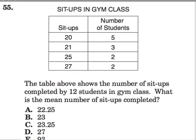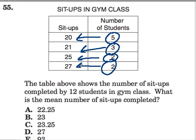We have a table of sit-ups and the number of students who could accomplish those sit-ups. Five students could accomplish 20 sit-ups. Another three could accomplish 21 sit-ups. Two students could get 25 sit-ups, and another two students could get 27.